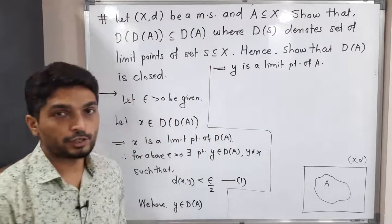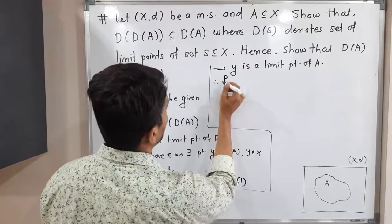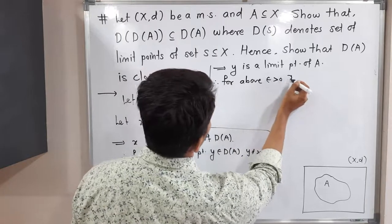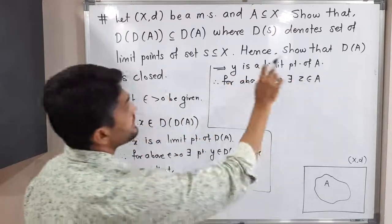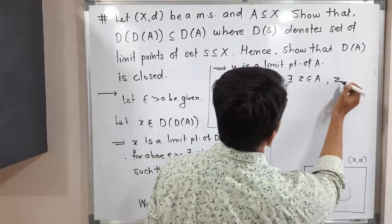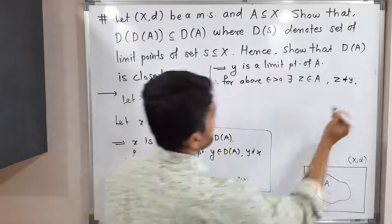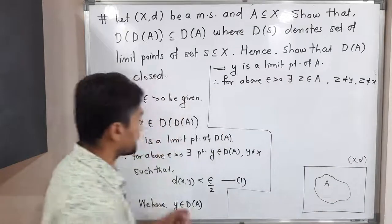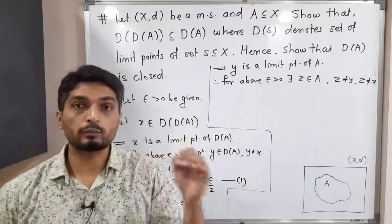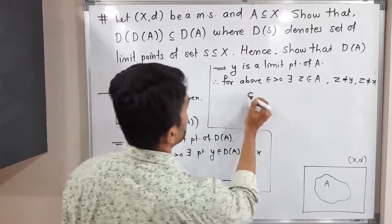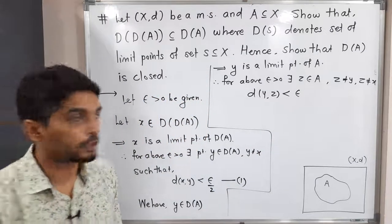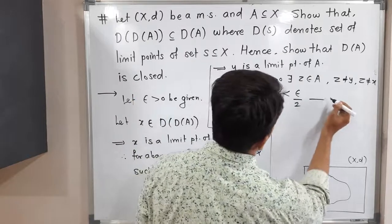Using the same epsilon definition of limit point, since Y is a limit point of A, for the above epsilon greater than 0 there exists a point Z belonging to A, with Z not equal to Y — we can also take Z not equal to X, since we are selecting a point other than both Y and X — such that d(Y, Z) is less than epsilon by 2. I am calling this inequality number 2.